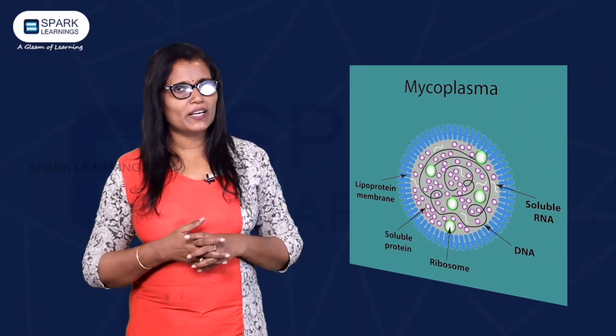Rudolf Virchow is considered the modifier of the cell theory. The smallest cell is mycoplasma. The largest cell is the ostrich egg. The largest cell in our body is the neuron.